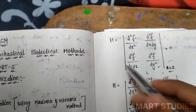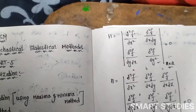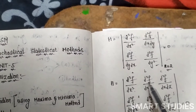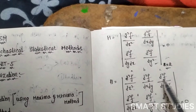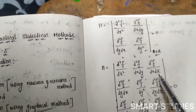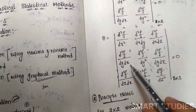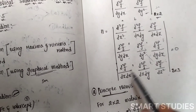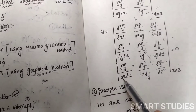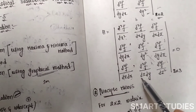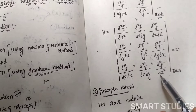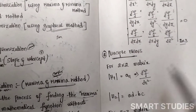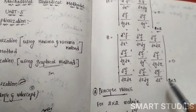For a 3×3 Hessian matrix, the form is: [∂²f/∂x², ∂²f/∂x∂y, ∂²f/∂x∂z; ∂²f/∂y∂x, ∂²f/∂y², ∂²f/∂y∂z; ∂²f/∂z∂x, ∂²f/∂z∂y, ∂²f/∂z²]. This is the 3×3 Hessian matrix structure.